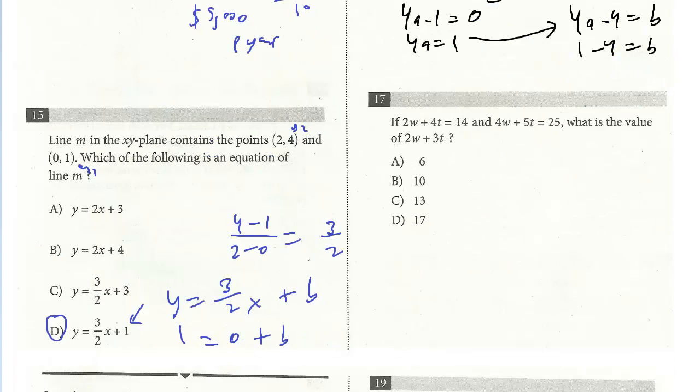Last question on this page, number 17. 2w plus 4t equals 14, and 4w plus 5t equals 25. What's the value of 2w plus 3t? I think many students have an inclination when they see this to solve it. A lot of students will just do elimination. I'm not saying that's wrong, but I'll tell you, I've done enough of these problems, what the shortcut is. You see, elimination usually you're just asked to find one variable, like just a w or maybe a w plus t, but this is a little unusual. We're asked to find a sum. Again, you could use elimination. You could multiply this top term by negative 2 and then cancel out the w, solve for t, plug it back in, solve for w, and then plug it in to find 2w plus 3t.